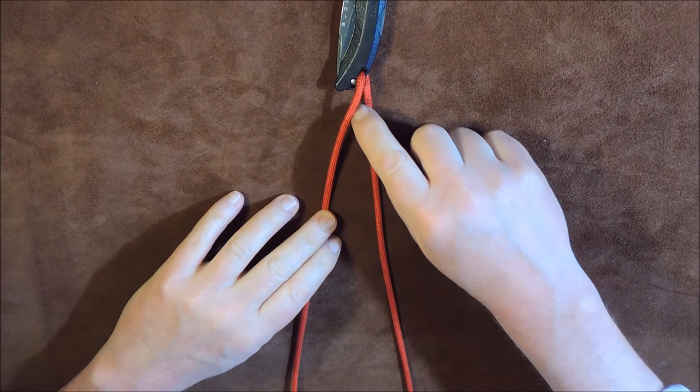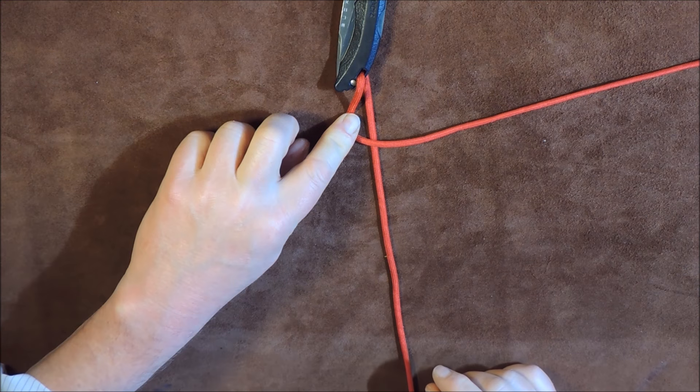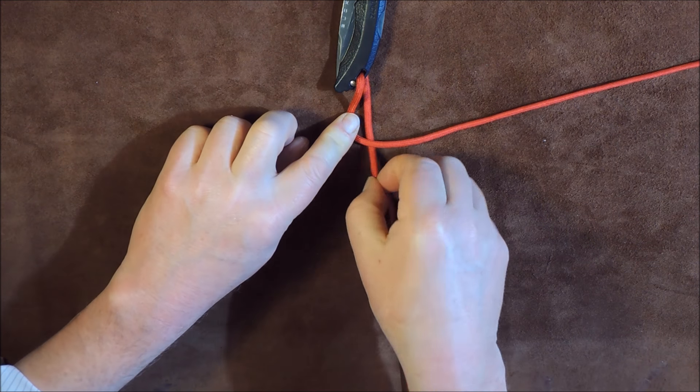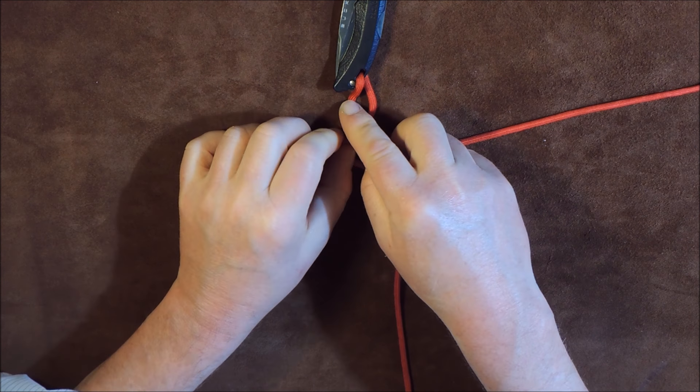All right, so what I've done is I've got myself an off-cut piece of paracord. This is 550 paracord here. I'll put a description in the description at the bottom where I've got my paracord from. What I've done is I've centered it and placed it on my knife like so.